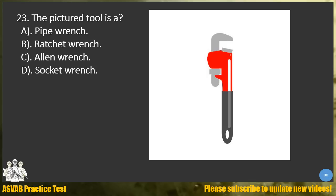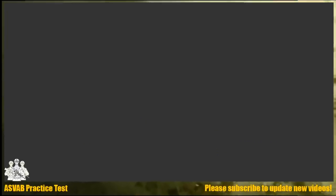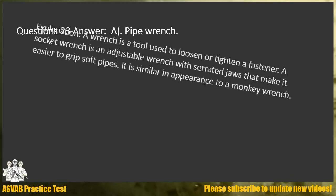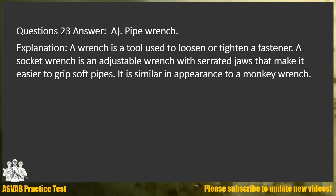Question 23. Answer A. Pipe wrench. Explanation: A wrench is a tool used to loosen or tighten a fastener. A pipe wrench is an adjustable wrench with serrated jaws that make it easier to grip soft pipes. It is similar in appearance to a monkey wrench.